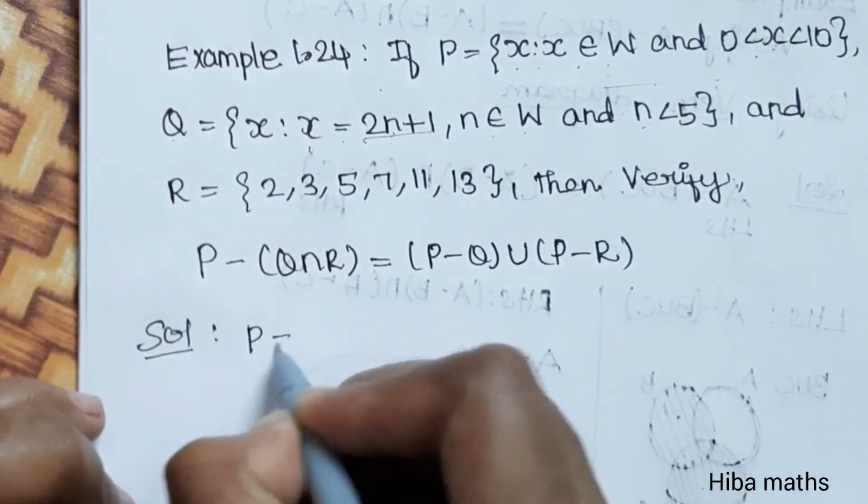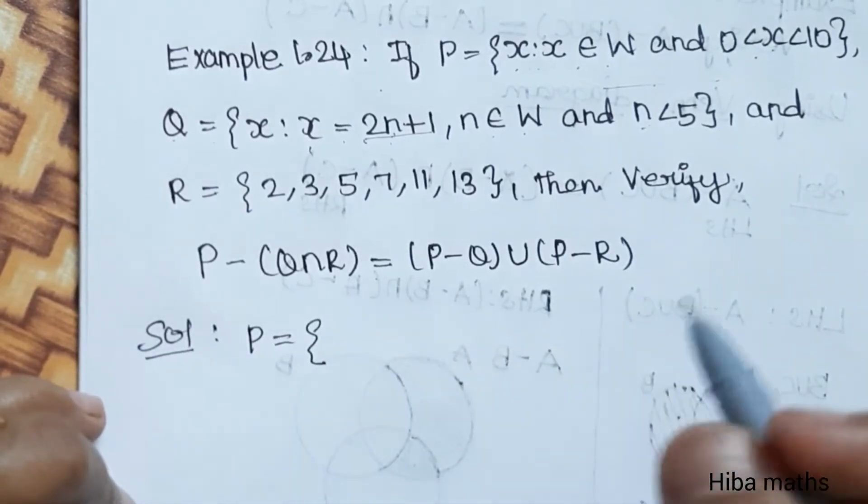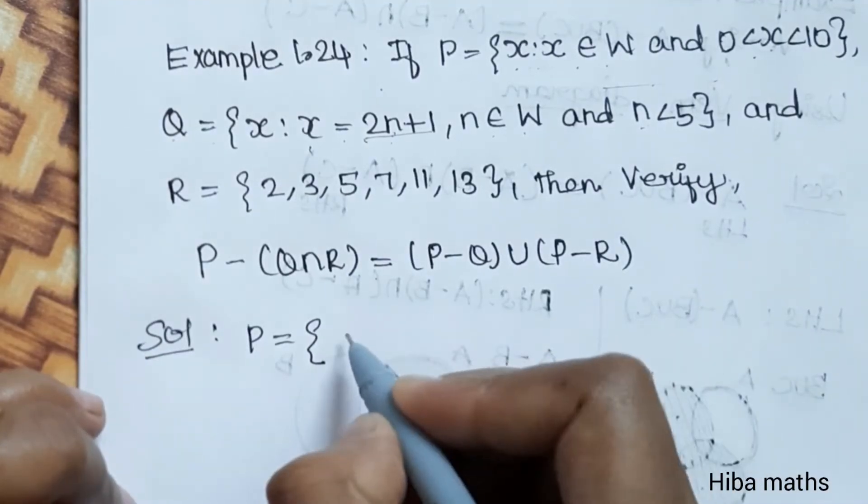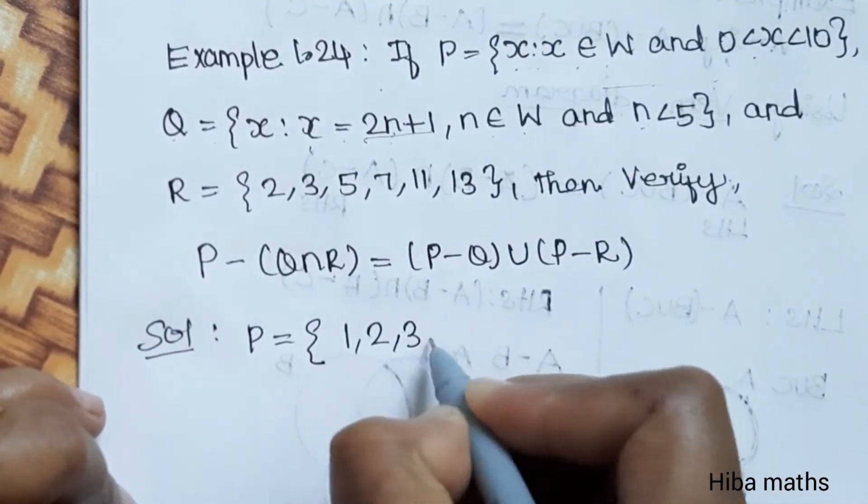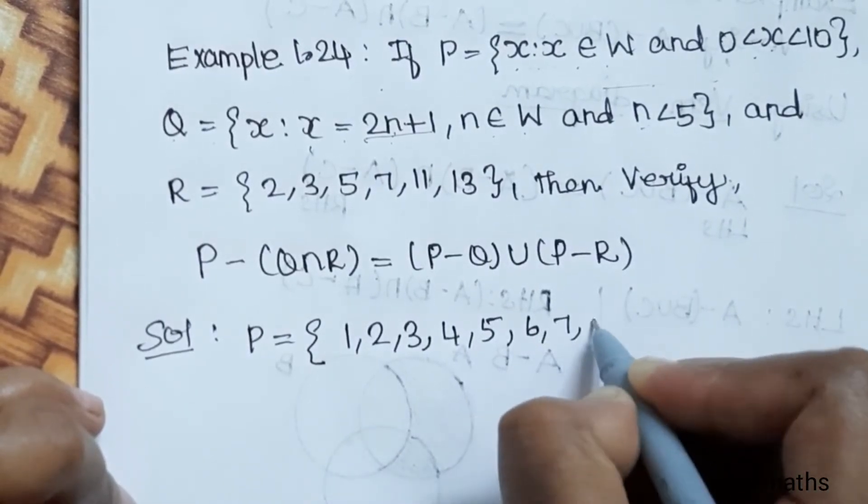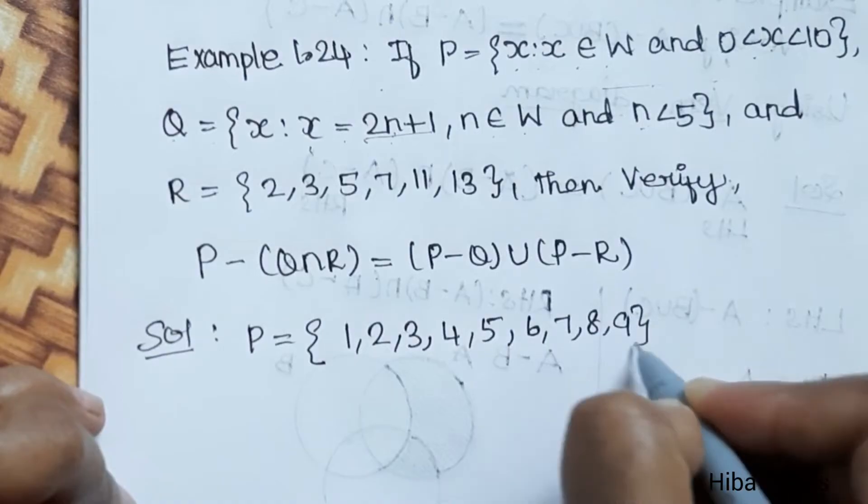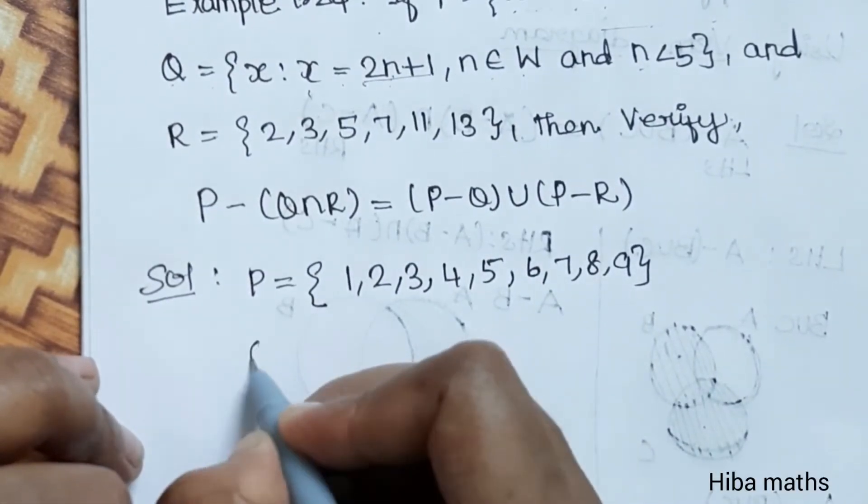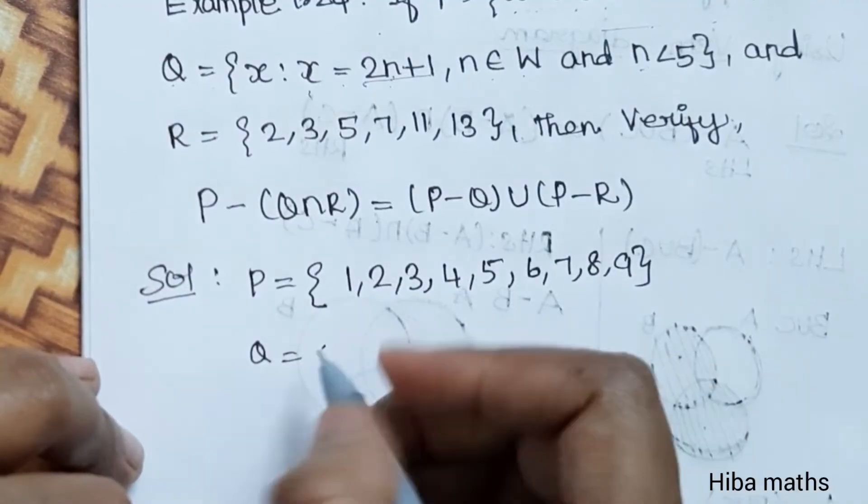P value: whole numbers less than 10, so P is equal to 1, 2, 3, 4, 5, 6, 7, 8, 9.